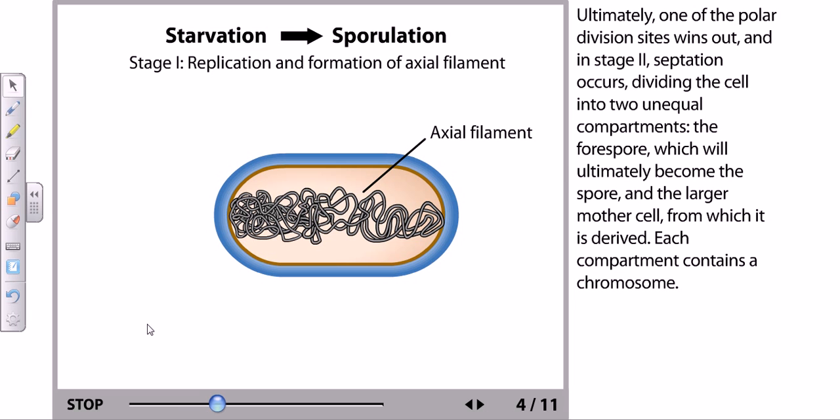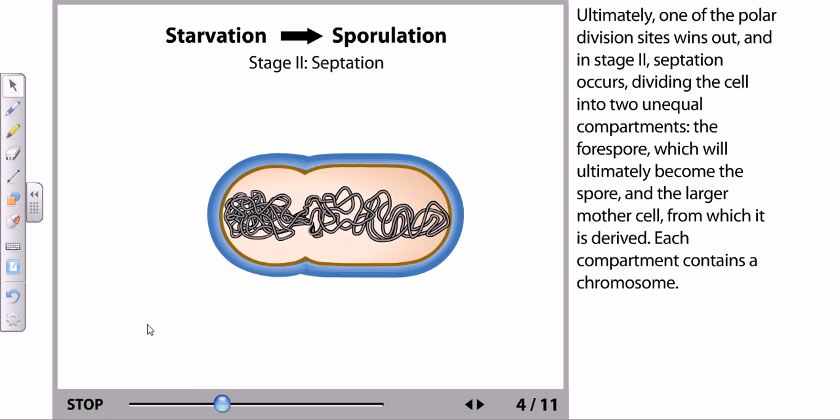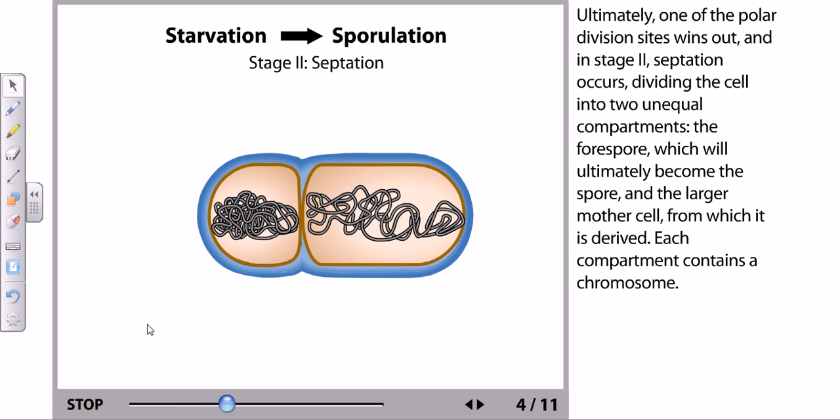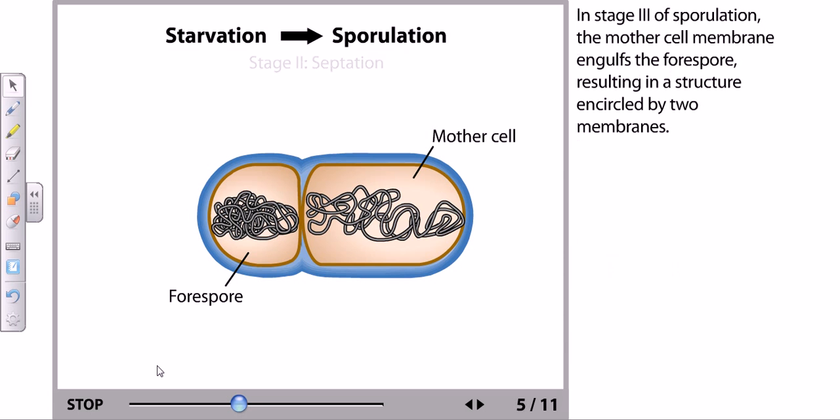Ultimately one of the polar division sites wins out. In stage 2, septation occurs dividing the cell into two unequal compartments: the forespore which will ultimately become the spore, and the larger mother cell from which it is derived. Each compartment contains a chromosome.